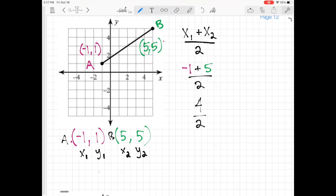And then my x midpoint, the x-coordinate for the midpoint, is going to be 4 divided by 2, which is 2.